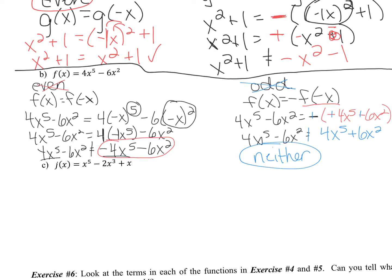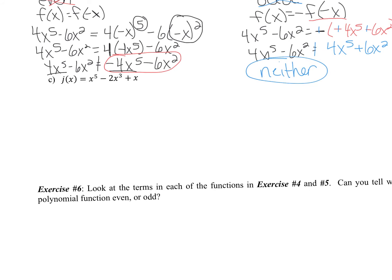If you are following along, this is a great time to try one on your own. So our last one, x to the fifth minus 2x cubed plus x. See what happens. See if you can figure out if it's even or odd or neither. Hopefully you've tried it. I'm going to start to go through it now a little faster. So here is my even test. So I have x to the fifth minus 2x cubed plus x equals negative x to the fifth minus 2 negative x cubed plus negative x.